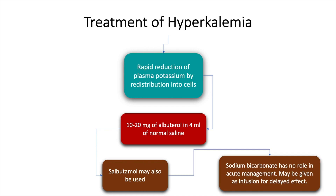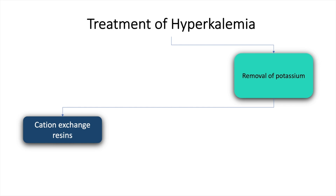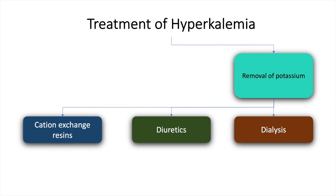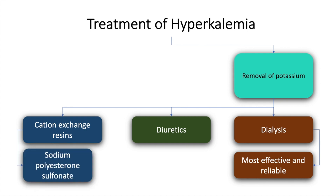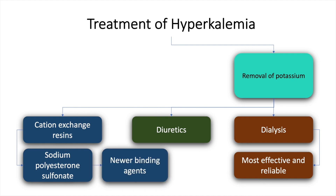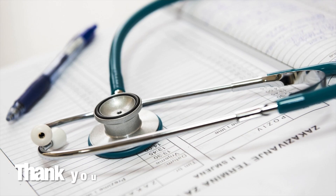Sodium bicarbonate has no role in acute management and may be given as an infusion for delayed effect. Removal of potassium can be accomplished with cation exchange resins, diuretics, and dialysis — dialysis being the most effective and reliable technique. The resins include sodium polystyrene sulfonate and newer binding agents such as patiromer and ZS9, which bind potassium in exchange for calcium and have the potential to revolutionize the management of hyperkalemia.